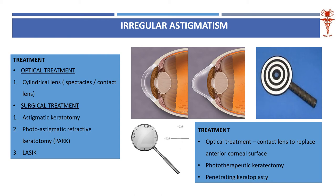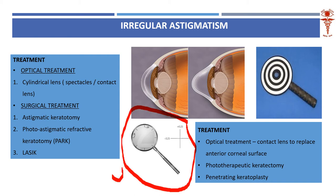To assess astigmatism, we have certain special equipment. Remember Jackson's crossed cylinder — it is an instrument used to assess astigmatism. Likewise, Placido's disc is also used to assess astigmatism.